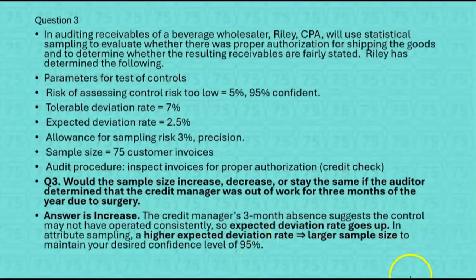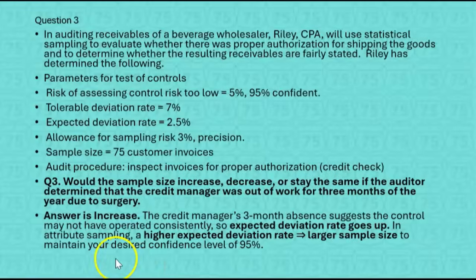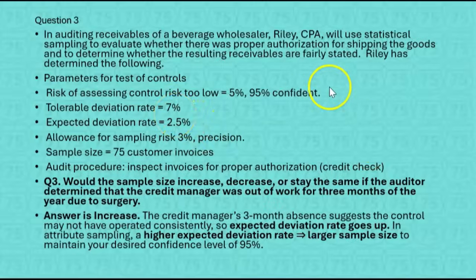The credit manager's three-month absence suggests the control may not have operated consistently, so the expected error rate goes up from 2.5% to something higher. In attribute sampling, a higher expected error rate results in a larger sample size to maintain the desired 95% confidence level. Just because you're expecting more error doesn't mean you can tolerate any more — so if you want to remain 95% confident, you'll have to sample more when you expect a higher deviation rate.